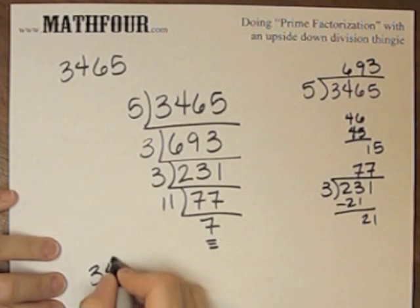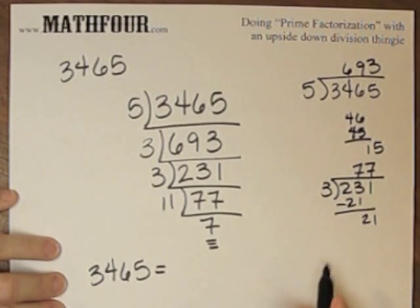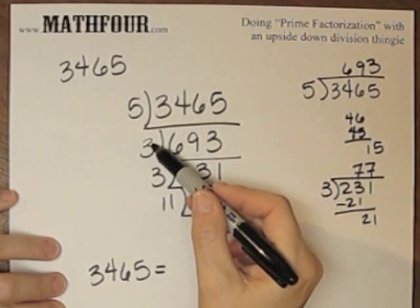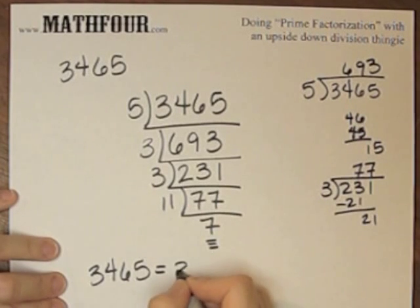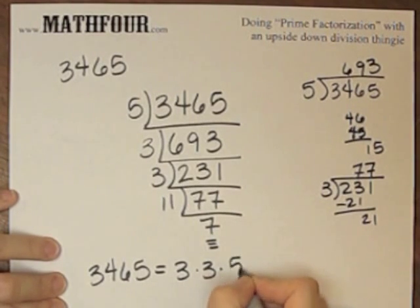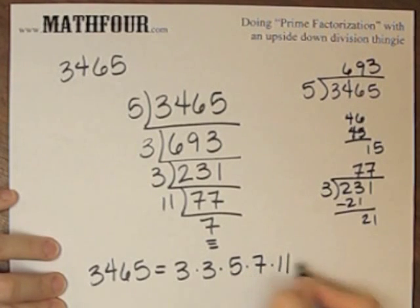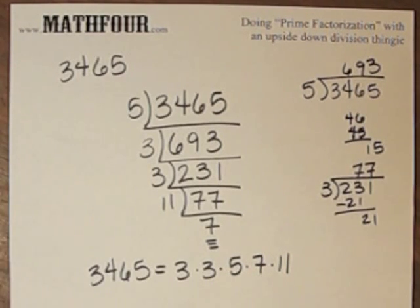Then I can write 3465, the number, and prime, as a prime factorization, is three times three times five times seven times eleven. And there is the prime factorization of 3465 with the upside-down division thingy method.